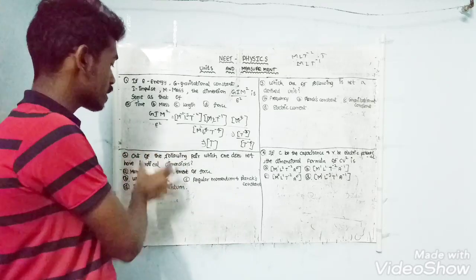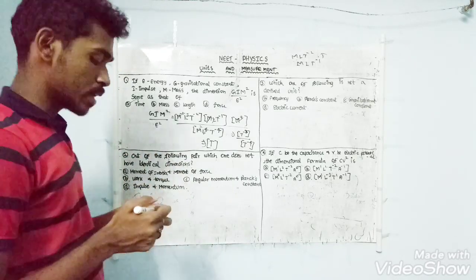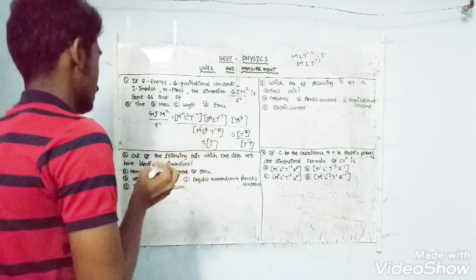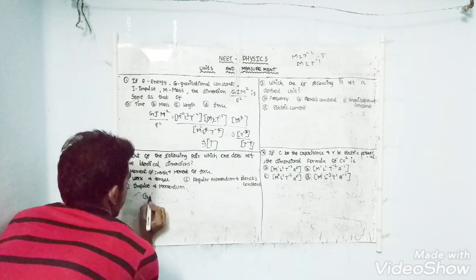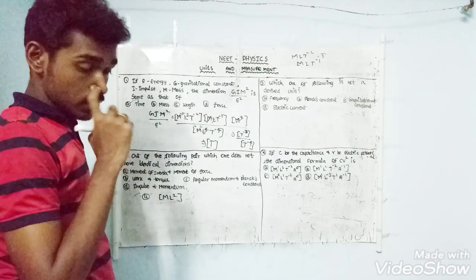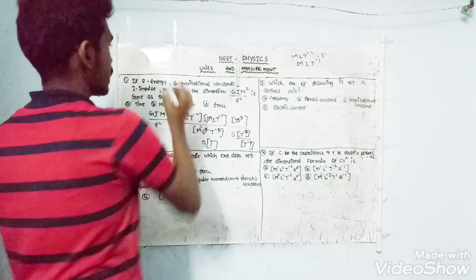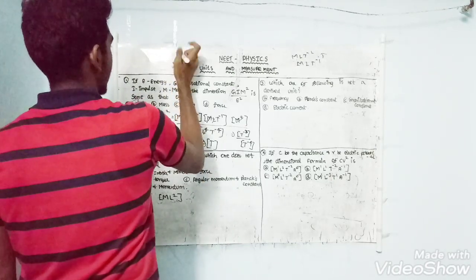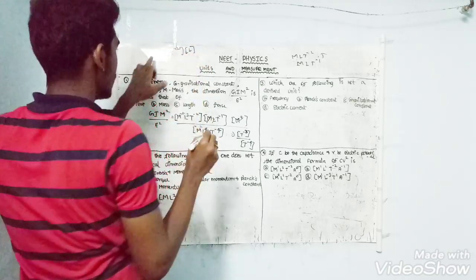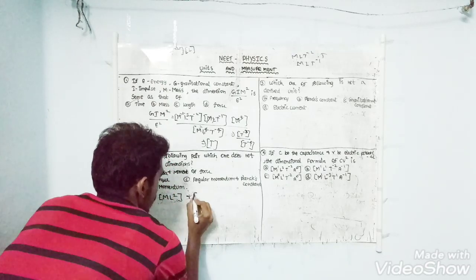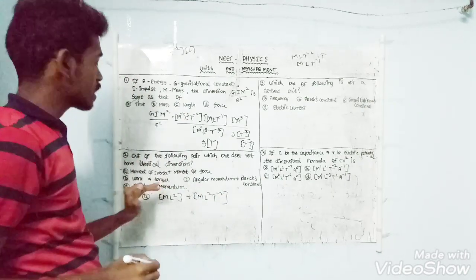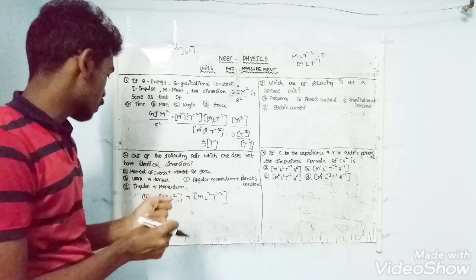What are the two quantities with identical dimensions? First: moment of inertia is M·L². Moment of force is distance times force, which gives M·L²·T⁻². So moment of inertia is M·L², and moment of force — also known as torque — is M·L²·T⁻². Work and torque both have dimension M·L²·T⁻².